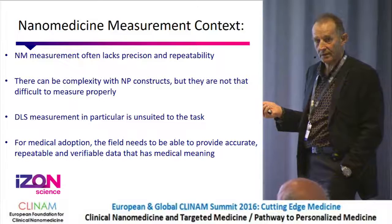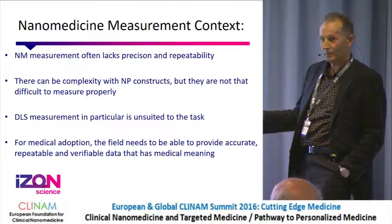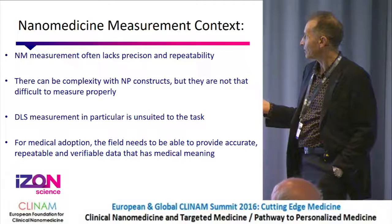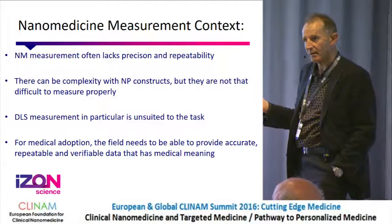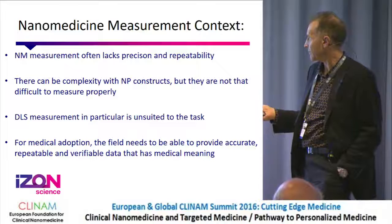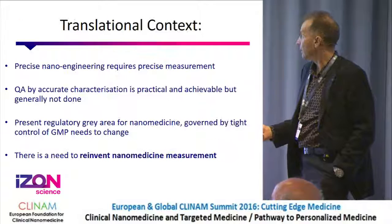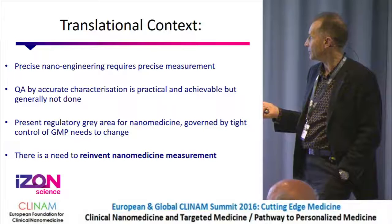Our view on nanomedicine measurement: one of the reasons that nanomedicine doesn't make progress very fast is that most of the measurement is not very good. People want to get caught up in the dream but don't want to do the basic work. Nanoparticle constructs can be somewhat complex but not really that difficult to measure properly. A DLS measurement, which is the most common, is the most unsuitable — and that's somewhat ironic. For medical adoption, the field needs accurate, repeatable, verifiable data with medical meaning. DLS type data will never give you that.